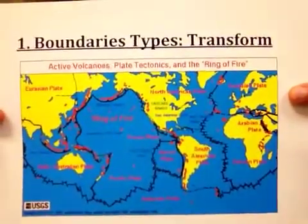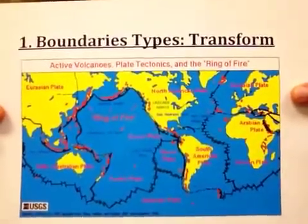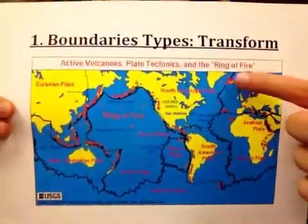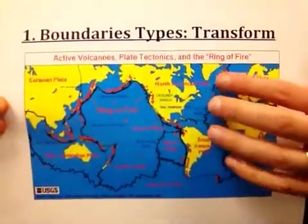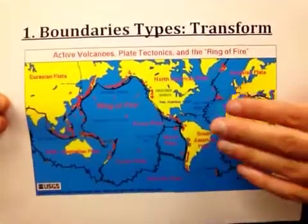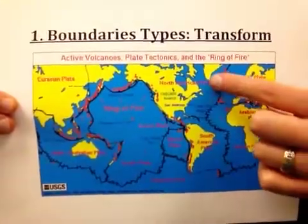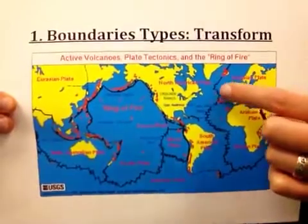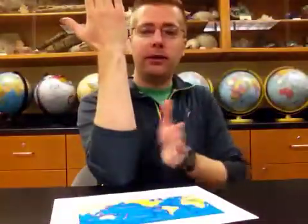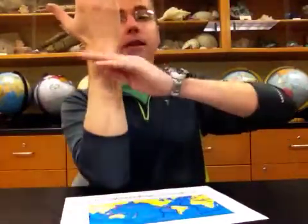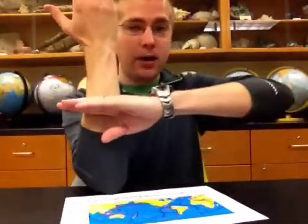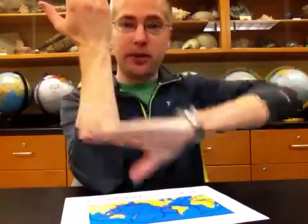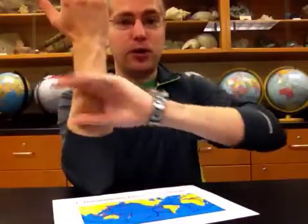Most often, transform plate boundaries are associated with divergent boundaries. The reason is that at a divergent boundary, the entire plate does not pull away at the same rate — some areas want to pull faster than others. To accommodate different rates of motion along the boundary, a transform fault must form, like a snap in the middle. These are the plate boundaries you should be familiar with for a plate tectonics lab in an introductory geology course.